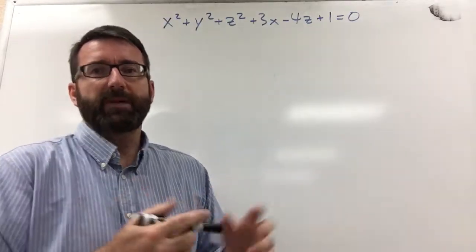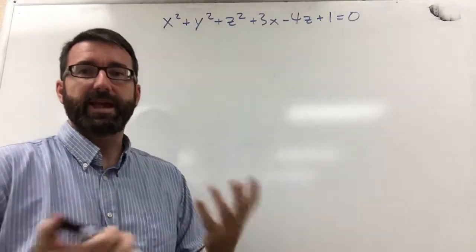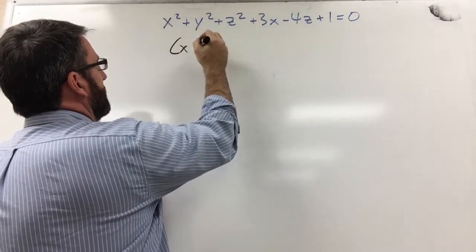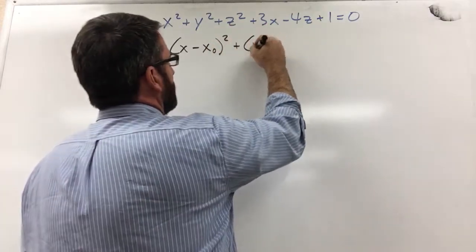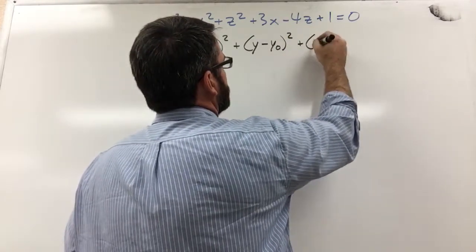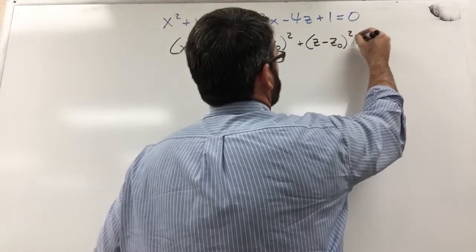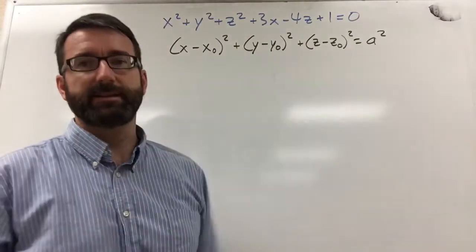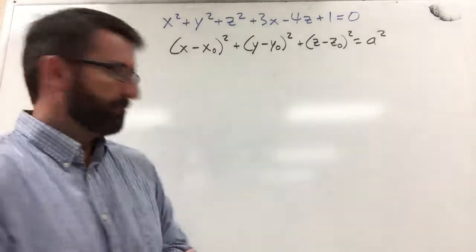The way to find the center and the radius is to first get this equation into standard form. Standard form is x minus x0 squared plus y minus y0 squared plus z minus z0 squared equals a squared, where x0, y0, z0 is the center of the sphere and a is the radius of the sphere.